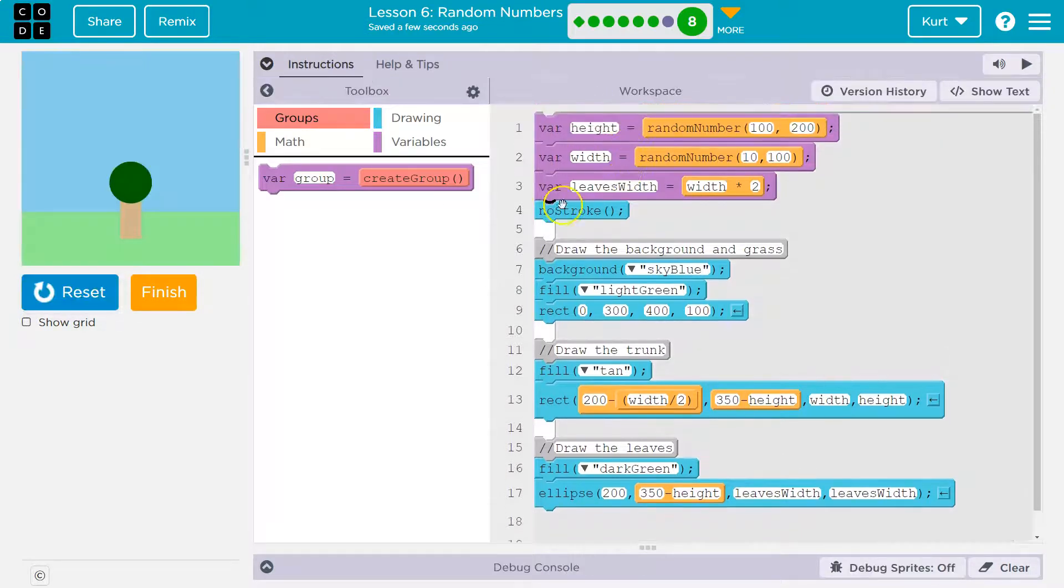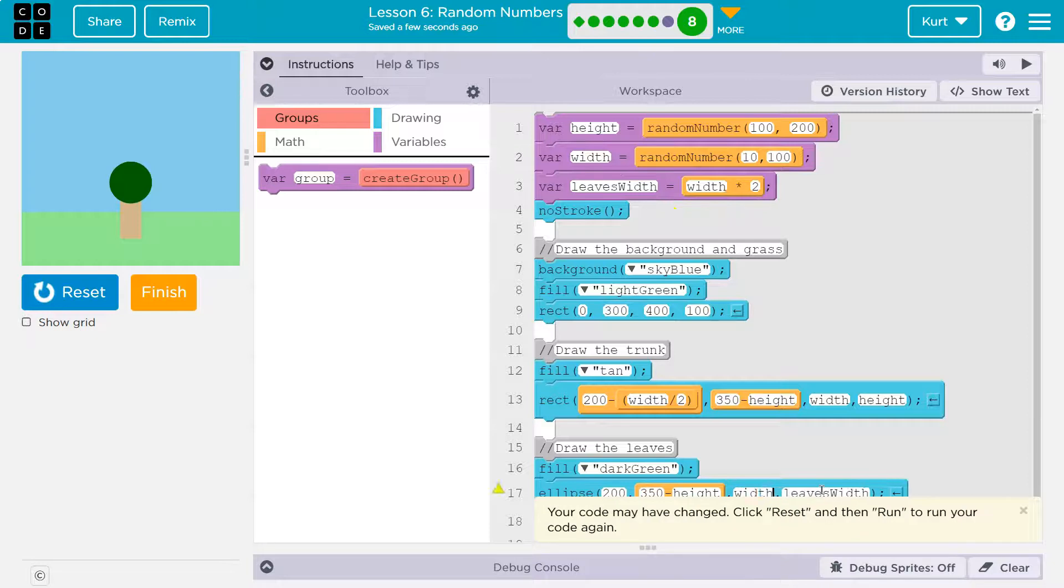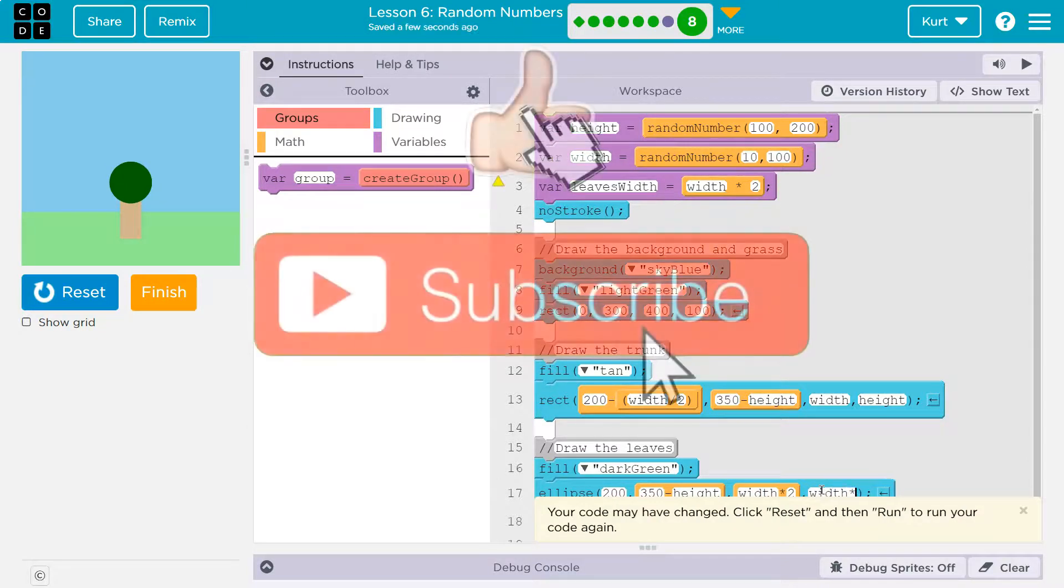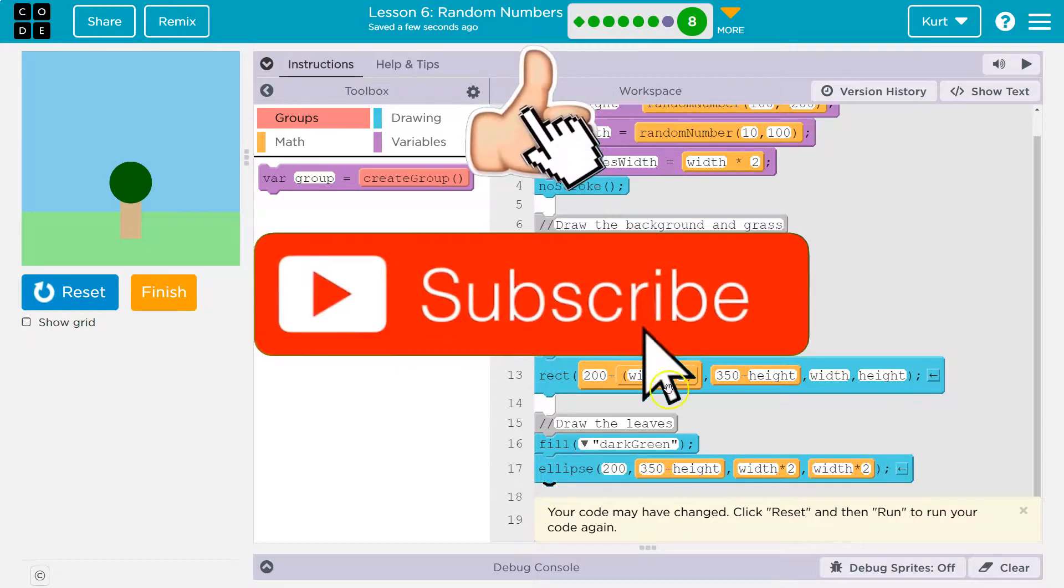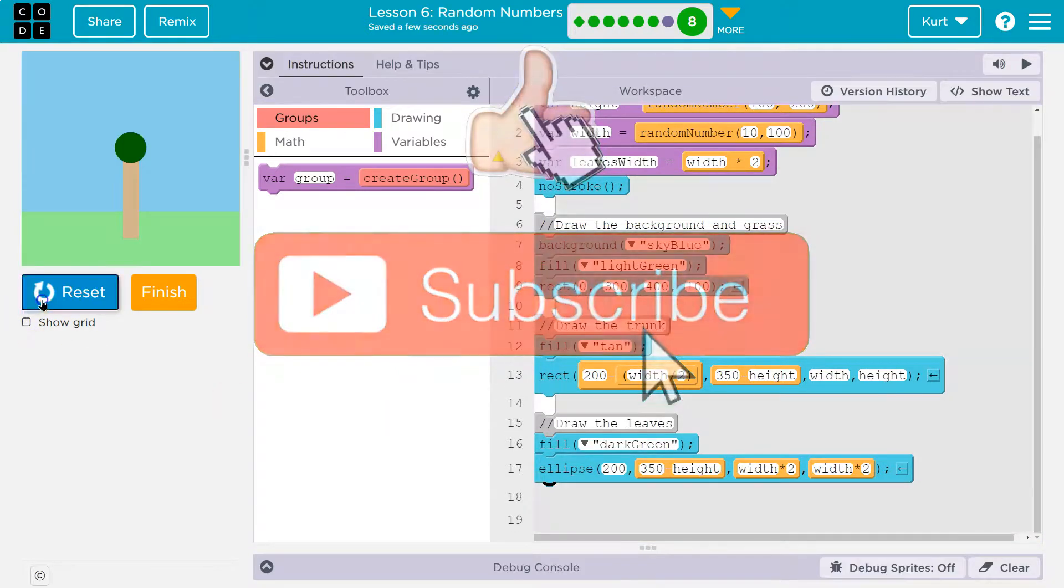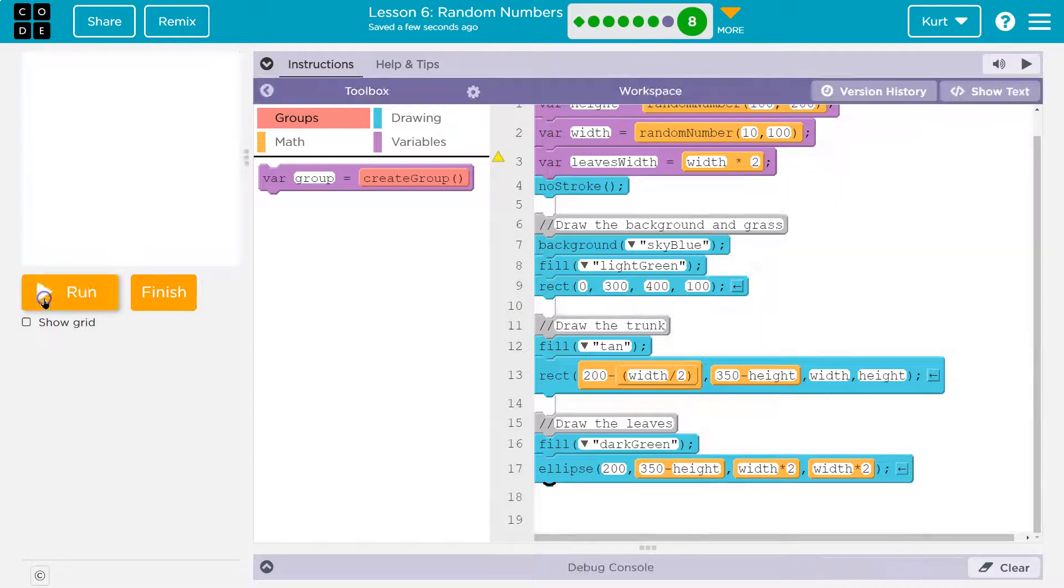The other way we could have done this, if we wanted to get rid of this variable, you could actually put down here width times two and width times two. This would also work. Either way is correct.